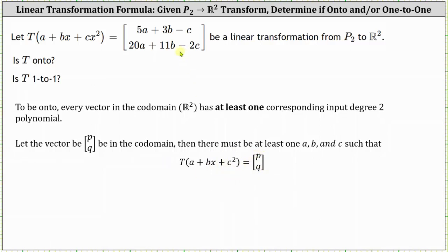Now looking back at the given transformation, we know that 5A plus 3B minus C must equal P and 20A plus 11B minus 2C must equal Q, which gives us the following system.